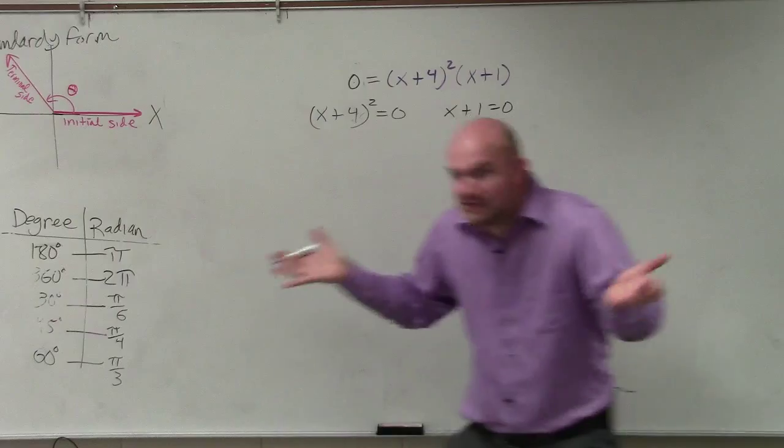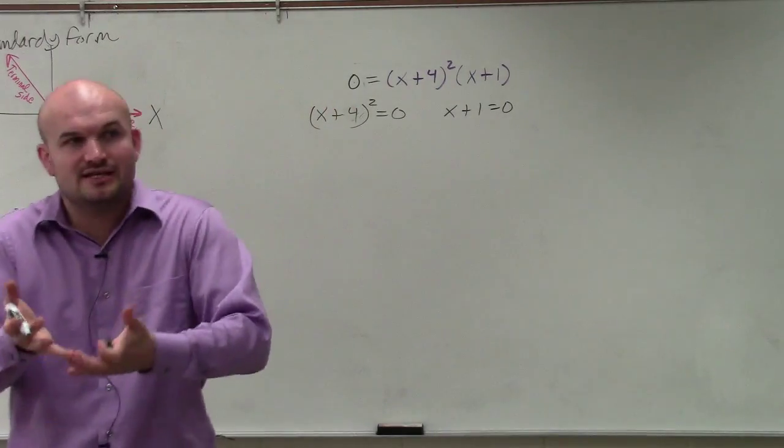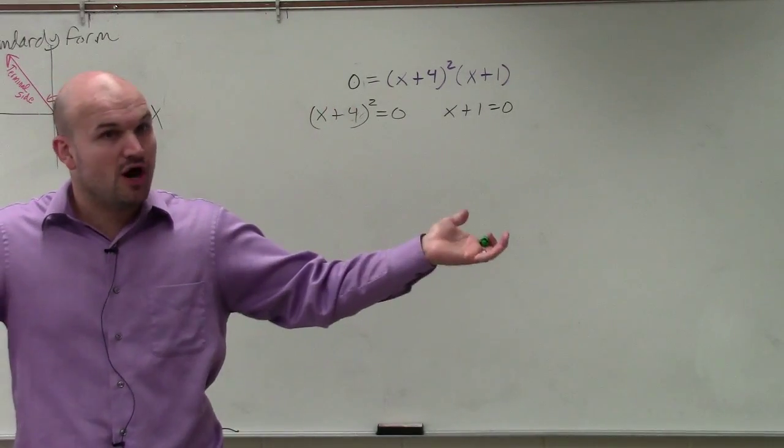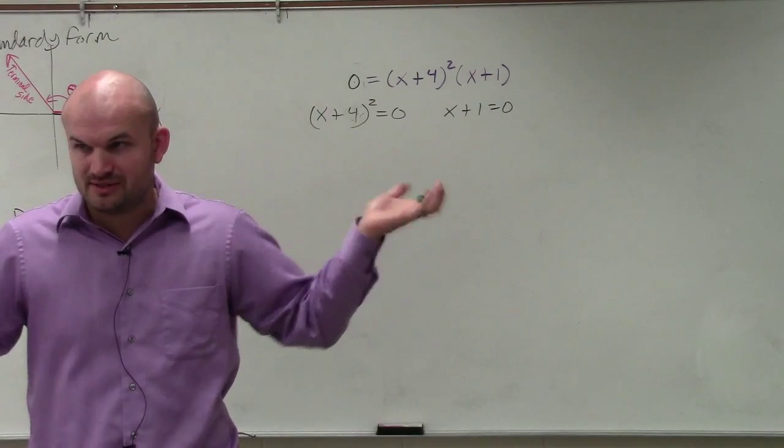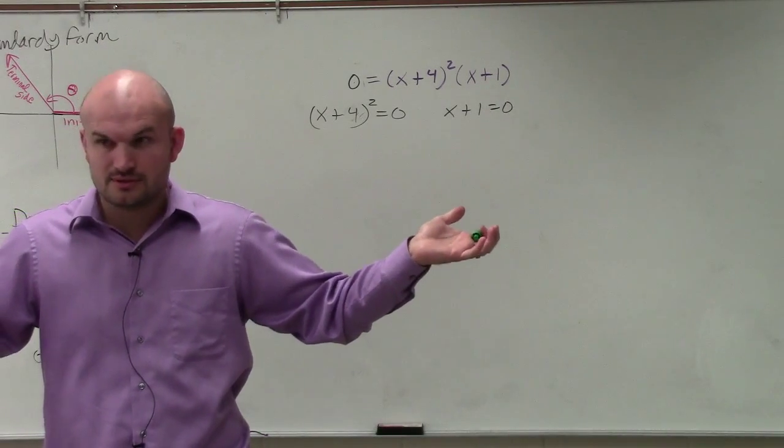It's already factored. It's in factored form, so we don't need to factor it. We just need to set them equal to 0 and then solve. We can apply the zero product property. Does everybody see that? Yes. OK.